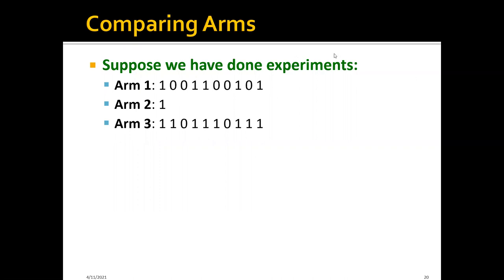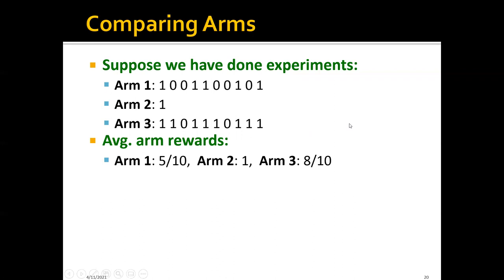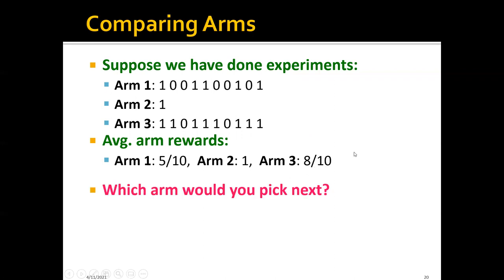Suppose we have done the following experiments. We have pulled arm m1 for 10 times and got certain rewards, pulled m2 only once with a reward of 1, and pulled m3 for 10 times. If we calculate the average arm rewards, the average reward for m1 is 0.5, for m2 is exactly 1, and for m3 the average reward is 0.8. Now the question is which arm would you pick next? If we use our previous greedy algorithm, we'll probably pick the second arm because it currently has the largest average arm reward.